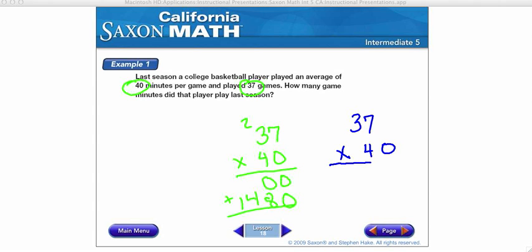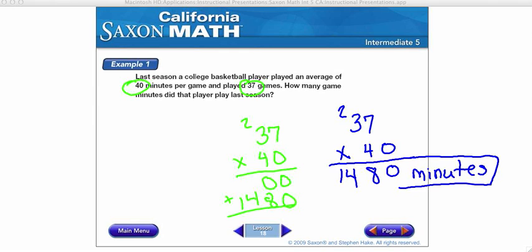But what I can do then is bring my 0 straight down, and now I can multiply. 4 times 7 is 28, 4 times 3 is 12, 13, 14, and I put in my units because it's a word problem. And now I am finished.